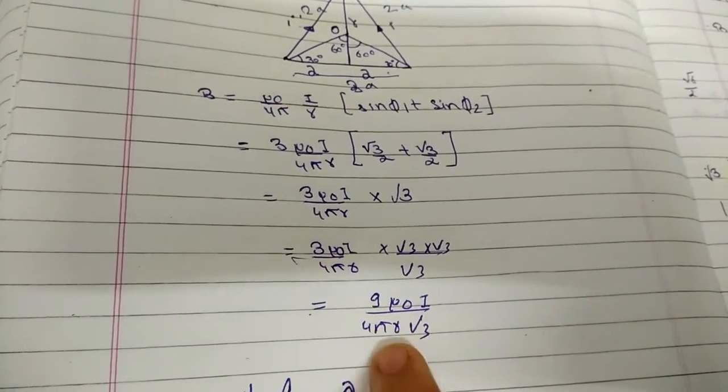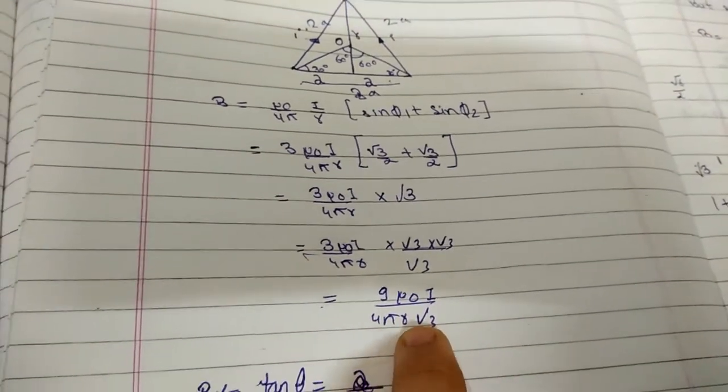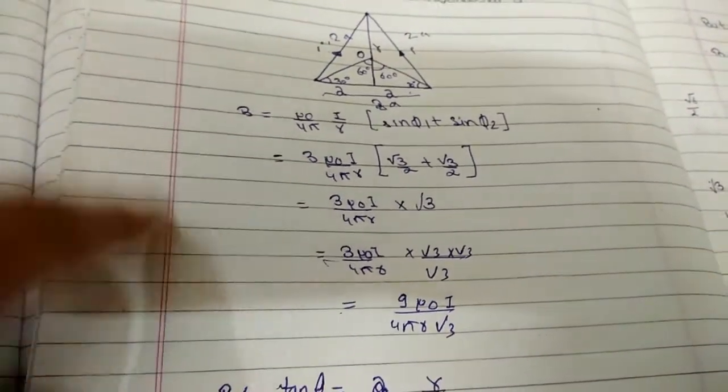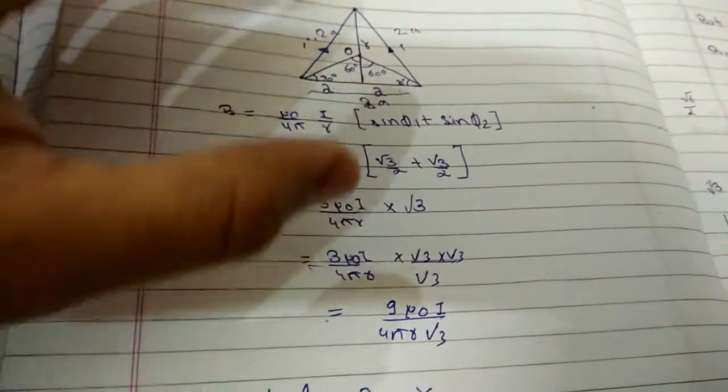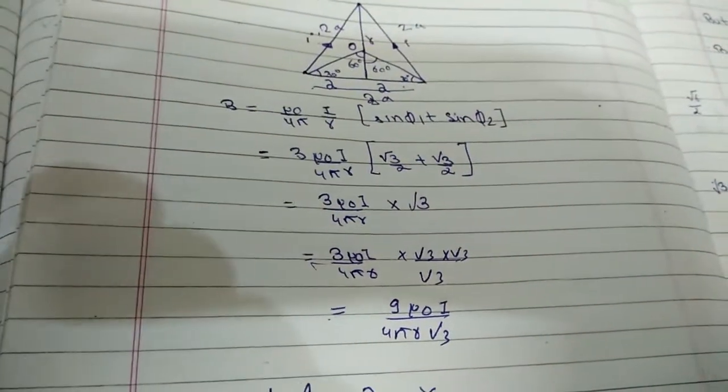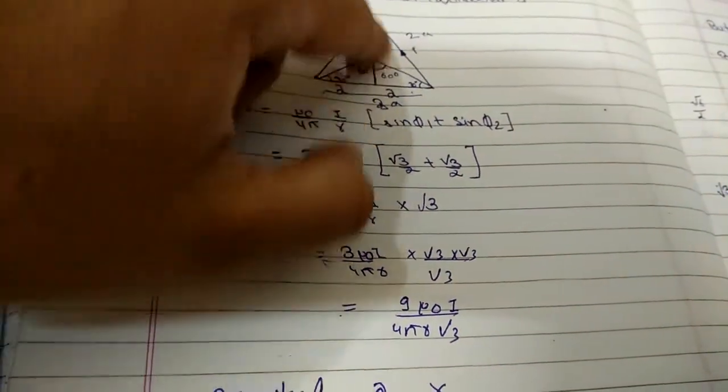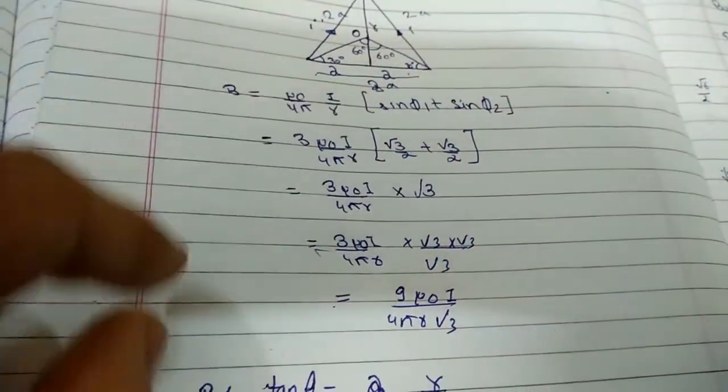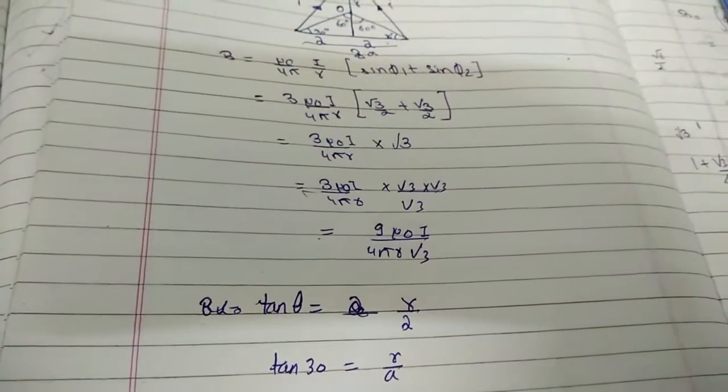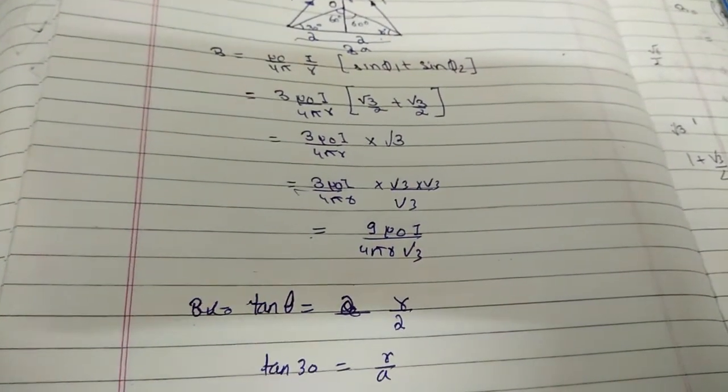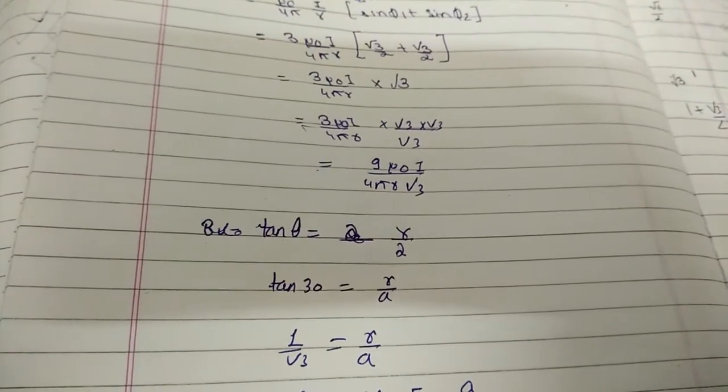We can find the value of r by using tan θ equals perpendicular upon base. So tan 30° equals r/a. Since tan 30° is 1/√3, we get r/a = 1/√3.